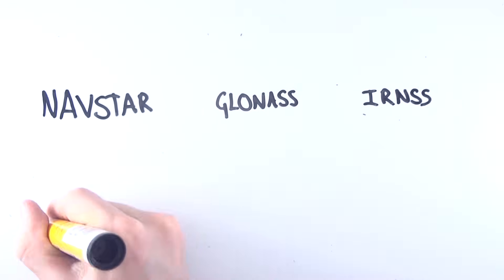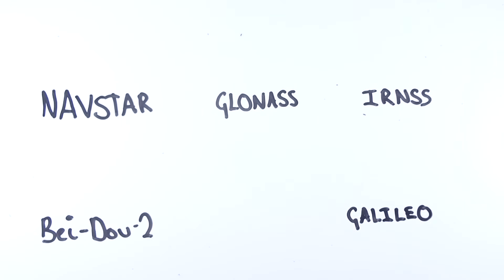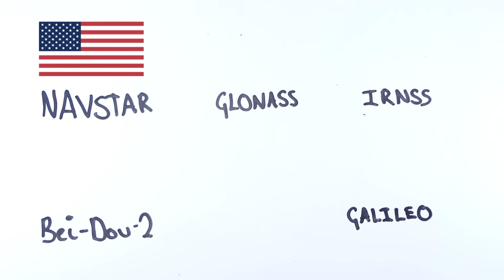There are many different types of navigational satellite systems from countries across the world, but the most popular and commonly used system is NAVSTAR, which is the USA system.